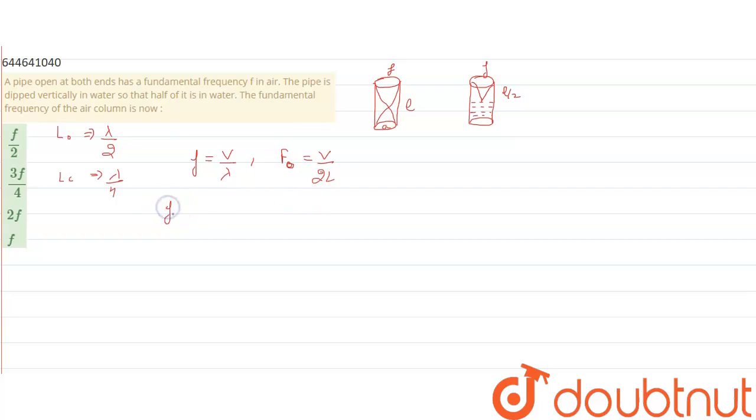Now for the closed pipe, let it be F_C. Same, V upon lambda, now the value for this will be V upon 4L. So here we can say F_C is equal to V upon 4L.